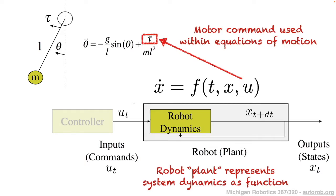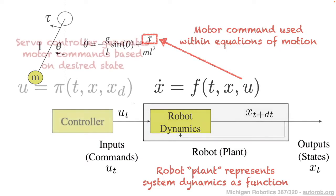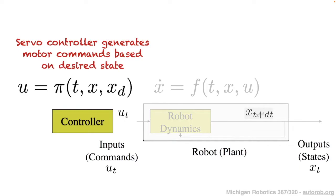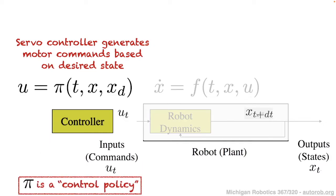Focusing on the robot dynamics: one way to think about this is modeling how the robot changes over time based on some command. We say x-dot — how the system changes — is a function f of time, the current state x, and some command u. For our pendulum, this command u is the motor torque within our equation of motion. The robot plant represents the complete system dynamics of our pendulum, including the physical dynamics implemented by our equation of motion.